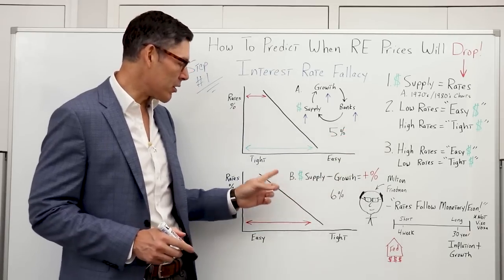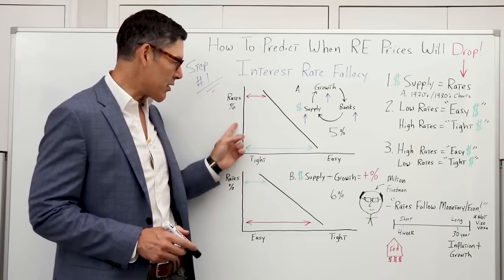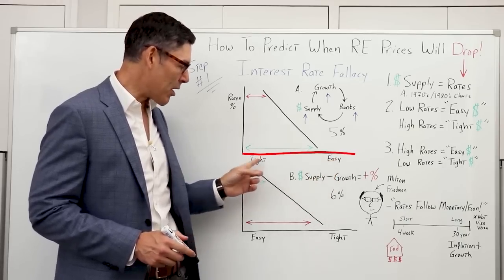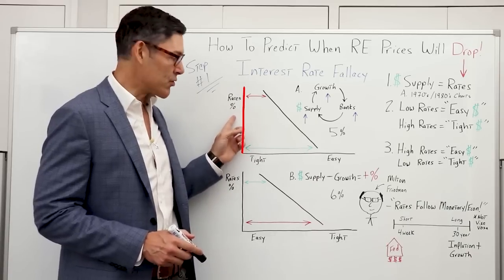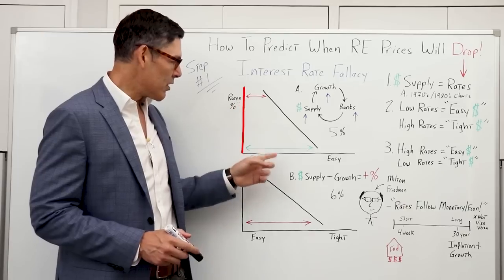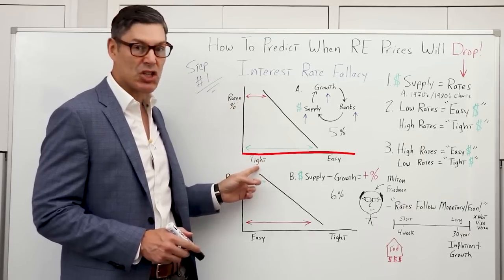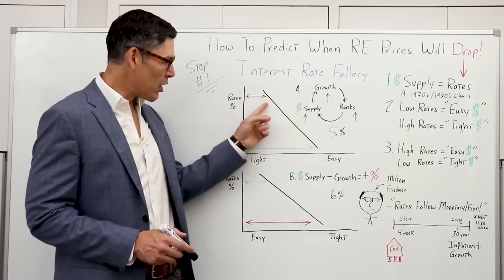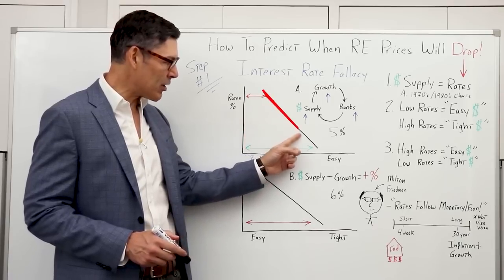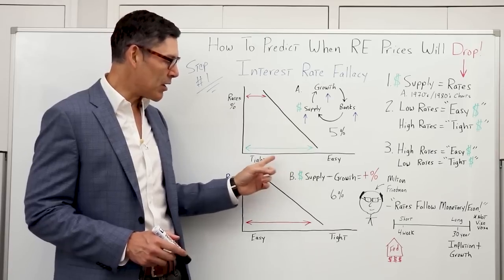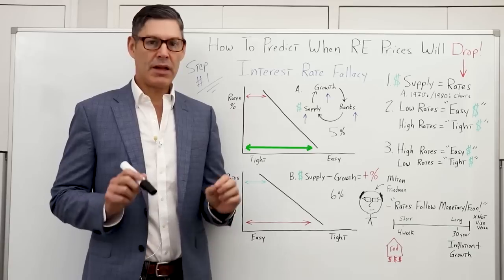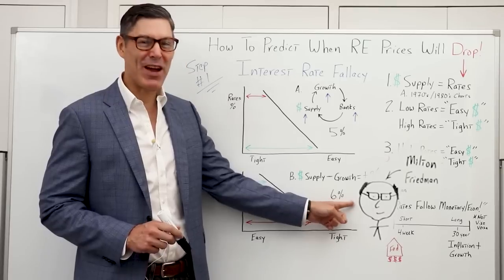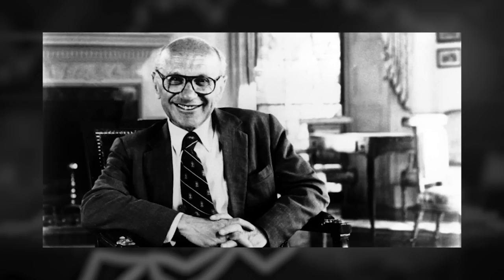If we were to draw a chart: interest rates are on the vertical axis, money policy is on the horizontal axis. As the interest rate goes up, money supply conditions become tighter, as indicated by a red line. If interest rates go down, we move further along the diagonal line, implying that money conditions are becoming more and more loose. And this is where Milton Friedman steps in.